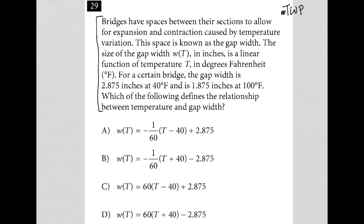The first sentence says: bridges have spaces between their sections to allow for expansion and contraction caused by temperature variation. I understand that — spaces between sections allow for expansion and contraction.